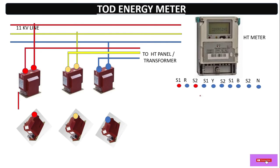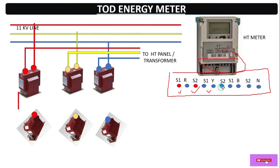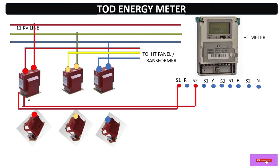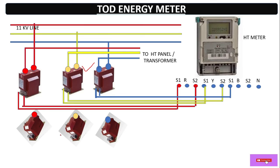Now for the CT secondary wiring, we have terminals S1 and S2 for each phase. For R phase: S1 connected, then S2. For Y phase CT: Y-S1, then Y-S2. Similarly for B phase: B-S1, then B-S2. This completes the CT secondary wiring. For all three phases, we loop the S2 terminals together and earth them — making it a common earth point.